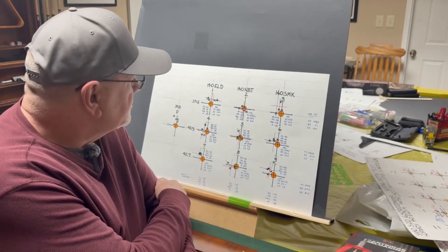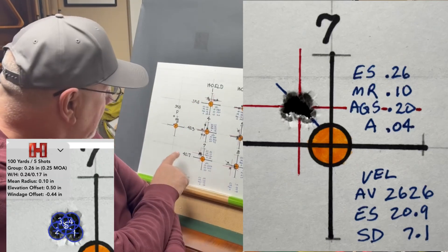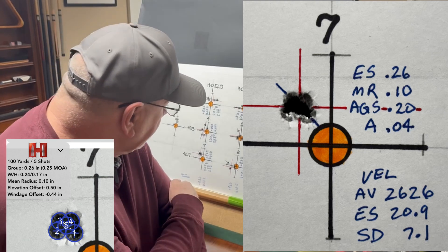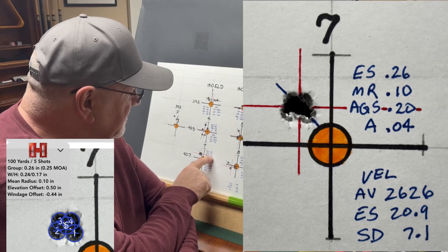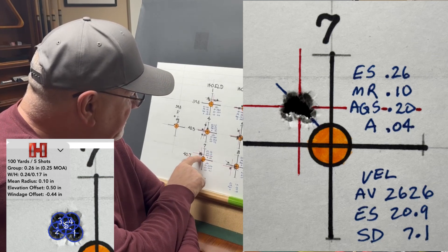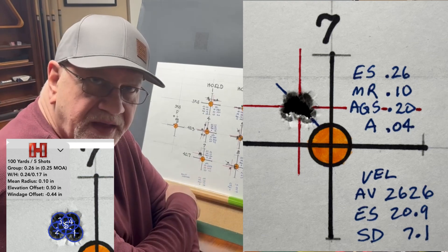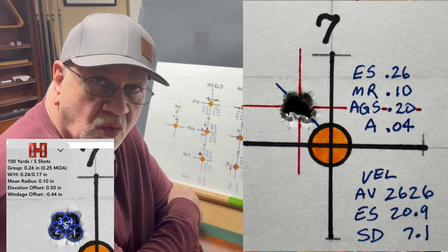Here's a load that I just shot at the range, a 140 grain Hornady ELD match bullet with 40.7 grains of H4350 powder. We've got an extreme spread of 0.26, a mean radius of 0.1, covering an area of 0.04 inches. Our velocity was 2,626 and a standard deviation of 7.1.